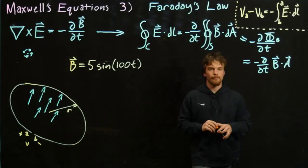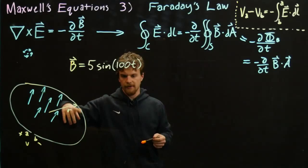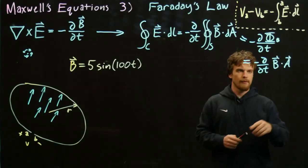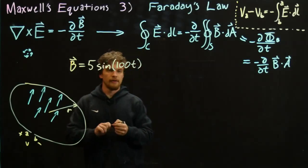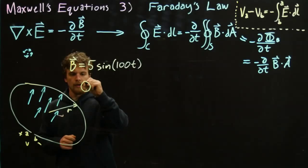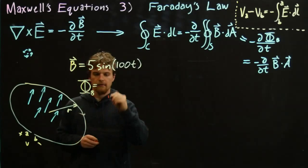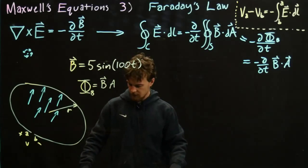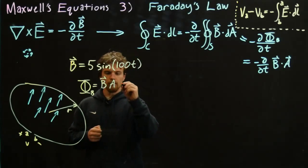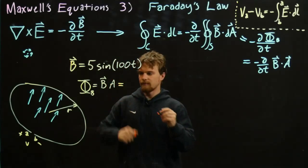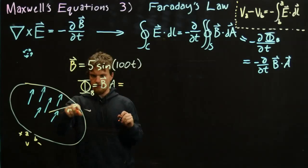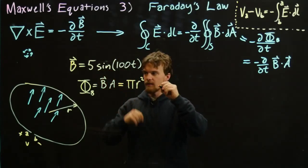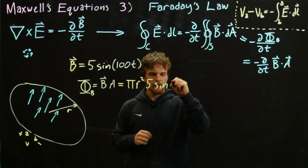Given the size of this circle, we know the area, so we can find the flux. Let's compute the flux first: flux equals B times A. Our area is a circle with radius r, so A = πr². And B = 5·sin(100t). So our magnetic flux through the surface is 5·sin(100t)·πr².